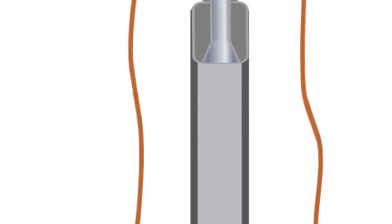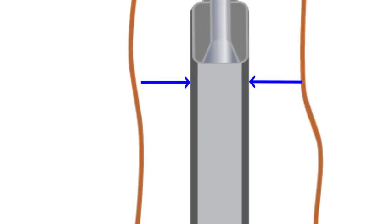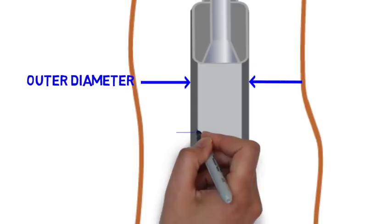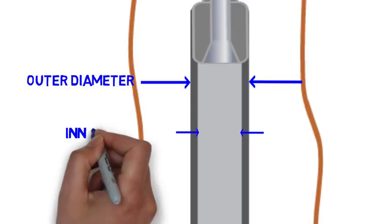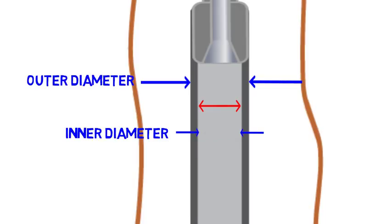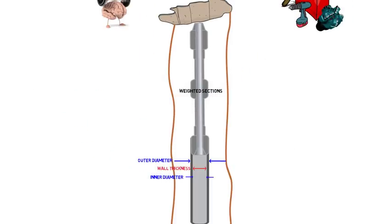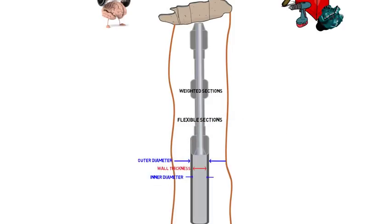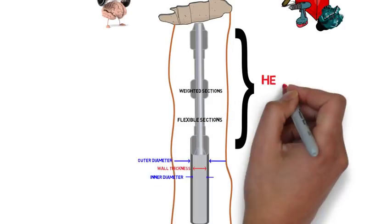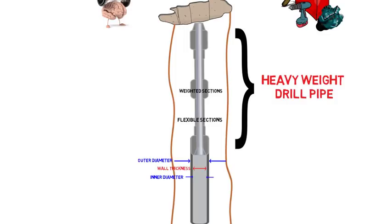Speaking of weight, it has to come from somewhere. Drill collars are pipe joints with extremely thick walls. They are designed to be as heavy as possible, but are also very rigid. Heavyweight drill pipe has thick, weighted sections like drill collars, but also thin sections for flexibility. Collars are usually used very near the bit, while heavyweight drill pipe is used farther up the string.